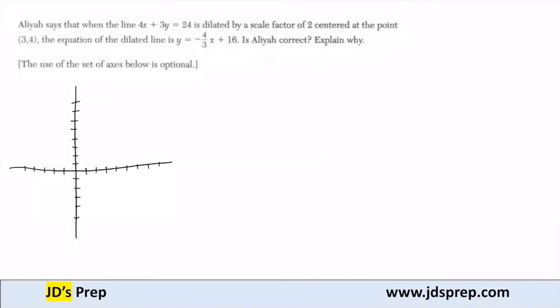Hello, welcome to JD's Prep. In this example, Aaliyah says that when the line 4x plus 3y equals 24 is dilated by a scale factor of 2 centered at the point (3, 4), the equation of the dilated line is y equals negative four-thirds x plus 16. Is Aaliyah correct?